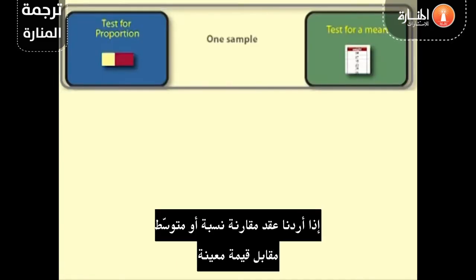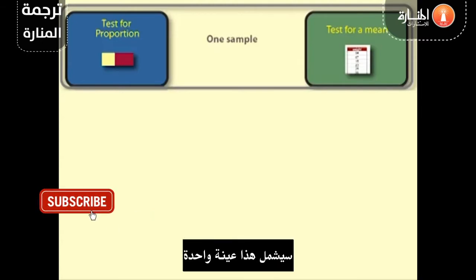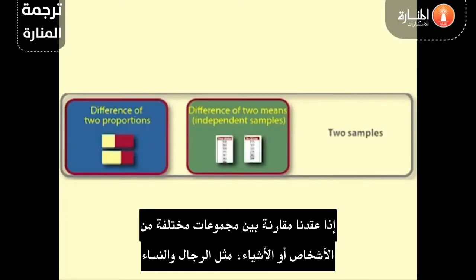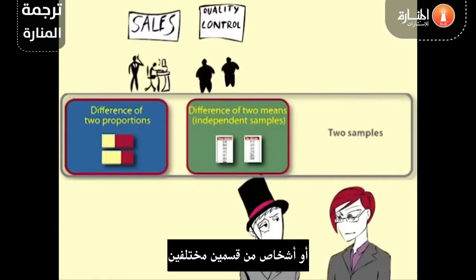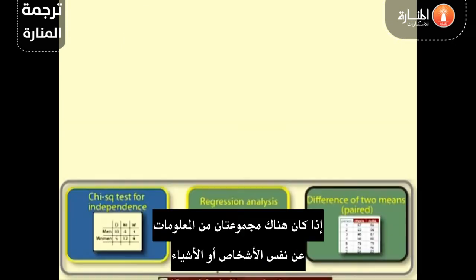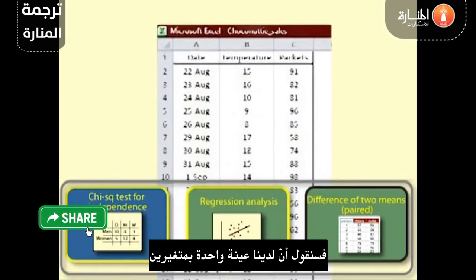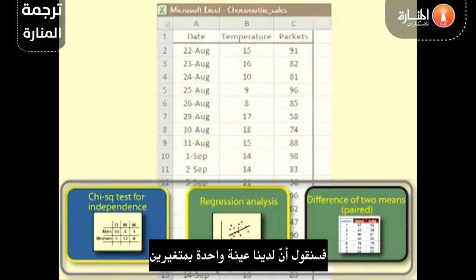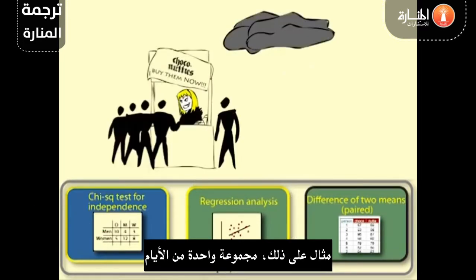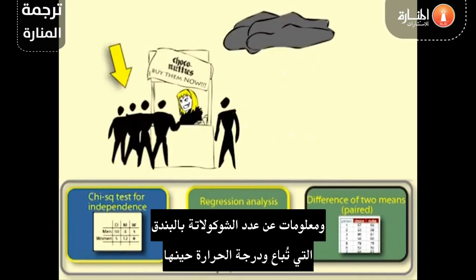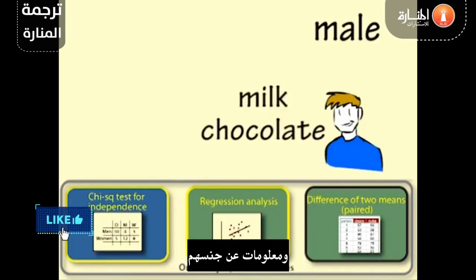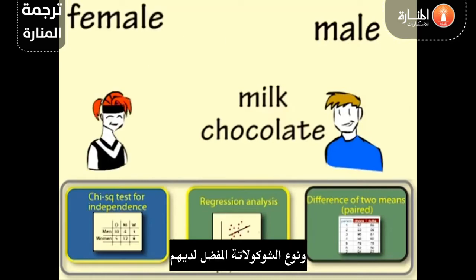If we wish to compare a proportion or a mean against a given value, this will involve one sample. If we are comparing two different lots of people or things, such as men and women or people from two different departments, then we would have two samples. If we have two sets of information on the same people or things, we would say we have one sample with two variables. An example is one set of days with information on how many choc-a-nutties are sold and what the temperature was, or one set of people with information on their gender and preferred type of chocolate.